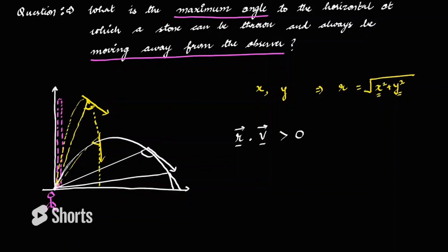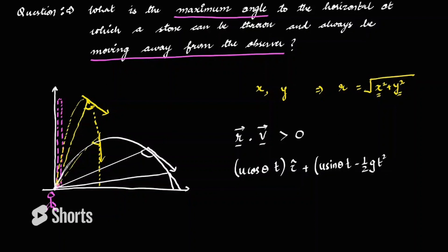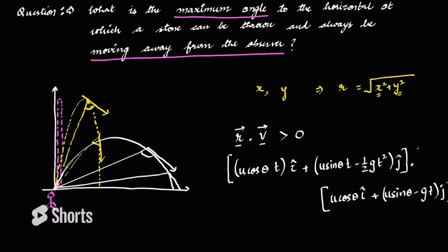The R vector can be written as (u·cosθ·t) î + (u·sinθ·t − ½gt²) ĵ. This is the position vector. The velocity vector is (u·cosθ) î + (u·sinθ − gt) ĵ. We need the dot product R · V to be greater than zero. Computing the dot product: î·î = 1, î·ĵ = 0, and ĵ·ĵ = 1. So the result must be greater than zero.